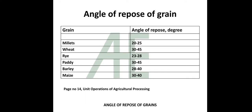Angle of repose of grains are as follows: Millets have angle of repose 20 to 25 degrees. Wheat 30 to 45 degrees. Rye 23 to 28 degrees. Paddy 30 to 45 degrees. Barley 28 to 40 degrees.